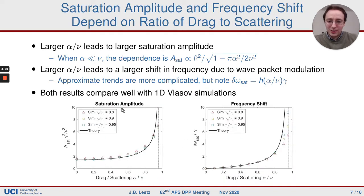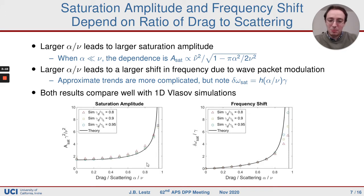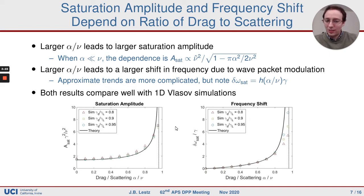Both saturation and the frequency shift are monotonically increasing with the ratio of drag to scattering, alpha over nu. The changes due to drag become most significant when the amount of drag becomes comparable to the amount of scattering. We confirmed these theoretical trends with 1D Vlasov simulations, and they agree pretty well.